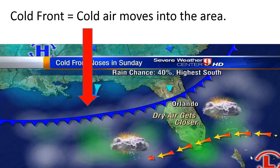The opposite of that is a cold front, and a cold front is shown by a blue line with blue triangles on it. Think of them as icicles hanging down from your roof during the winter months. A cold front is when cold air moves into the area. Please pause this video and write down the definition of cold front.